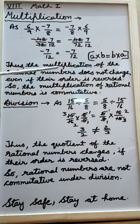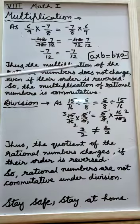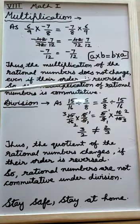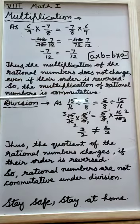Thus, the multiplication of the rational numbers does not change even if their order is reversed. So, the multiplication of rational numbers is commutative.